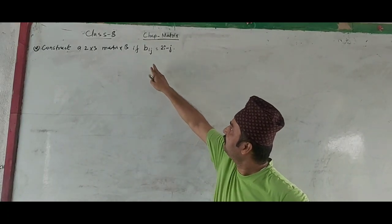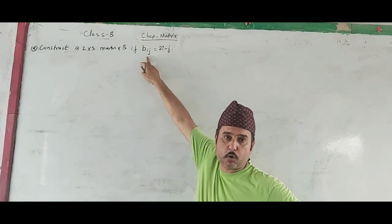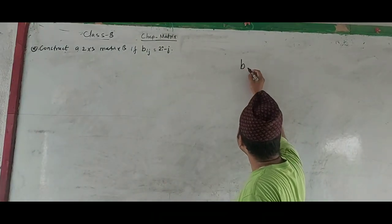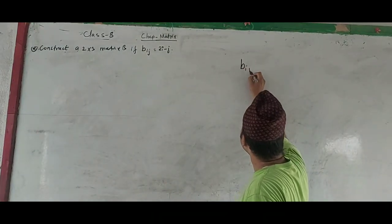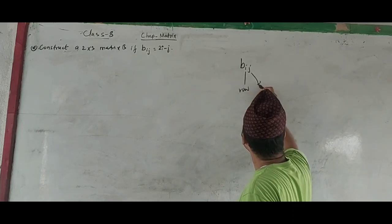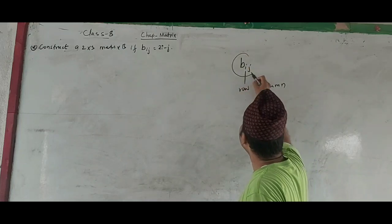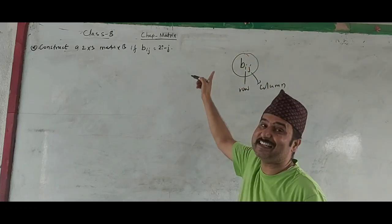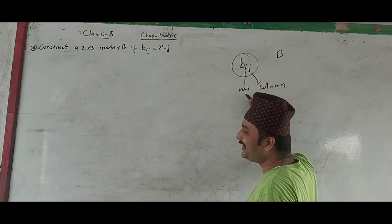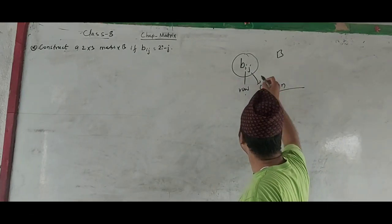Matrix is B. The condition is BIJ. Here I denotes rows. BIJ refers to matrix elements where I means row and J is column. So BIJ is an element of matrix B lying in the Ith row and Jth column.